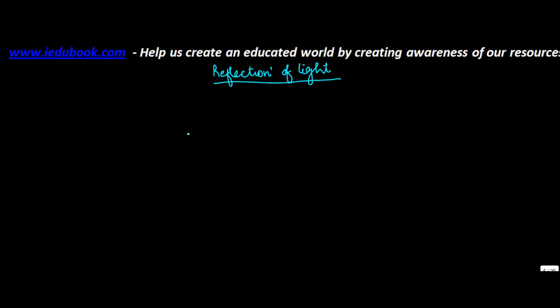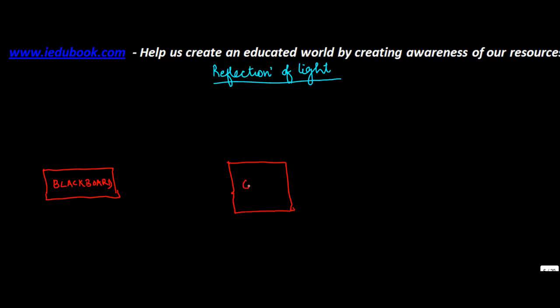In this video, I am going to explain to you about reflection of light. Before I explain the concept, let's take three objects: a blackboard, an ordinary glass just like you see in so many buildings or shops, and third, a mirror.